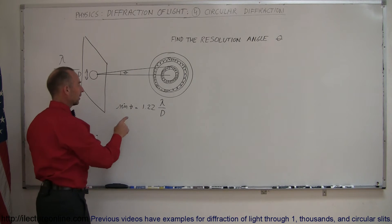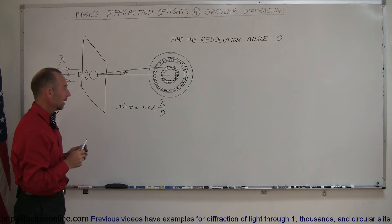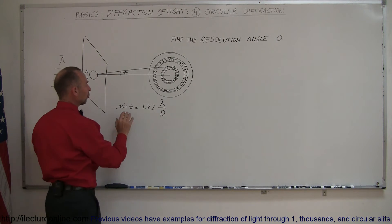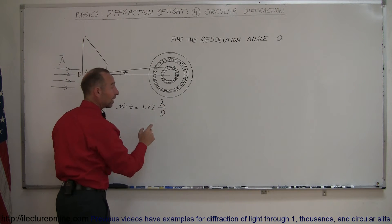You can see that the sine of theta for very small angles is approximately equal to theta, and you can then see that the smaller the angle can be achieved by having a smaller wavelength or a larger diameter.